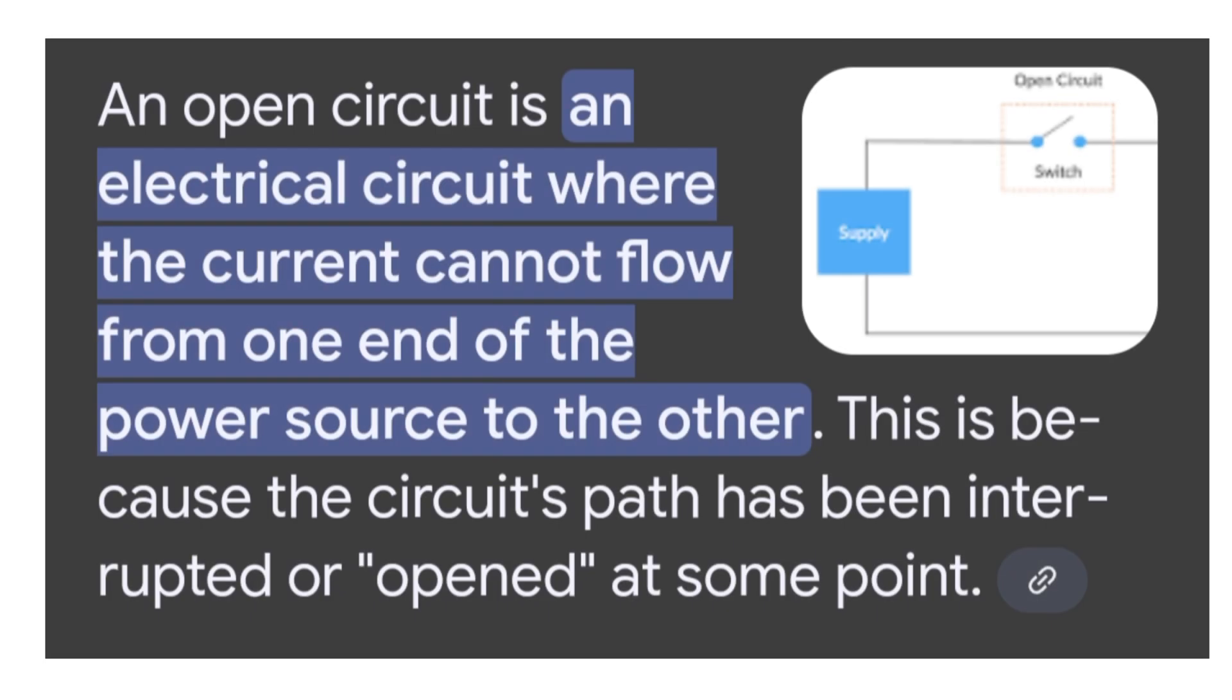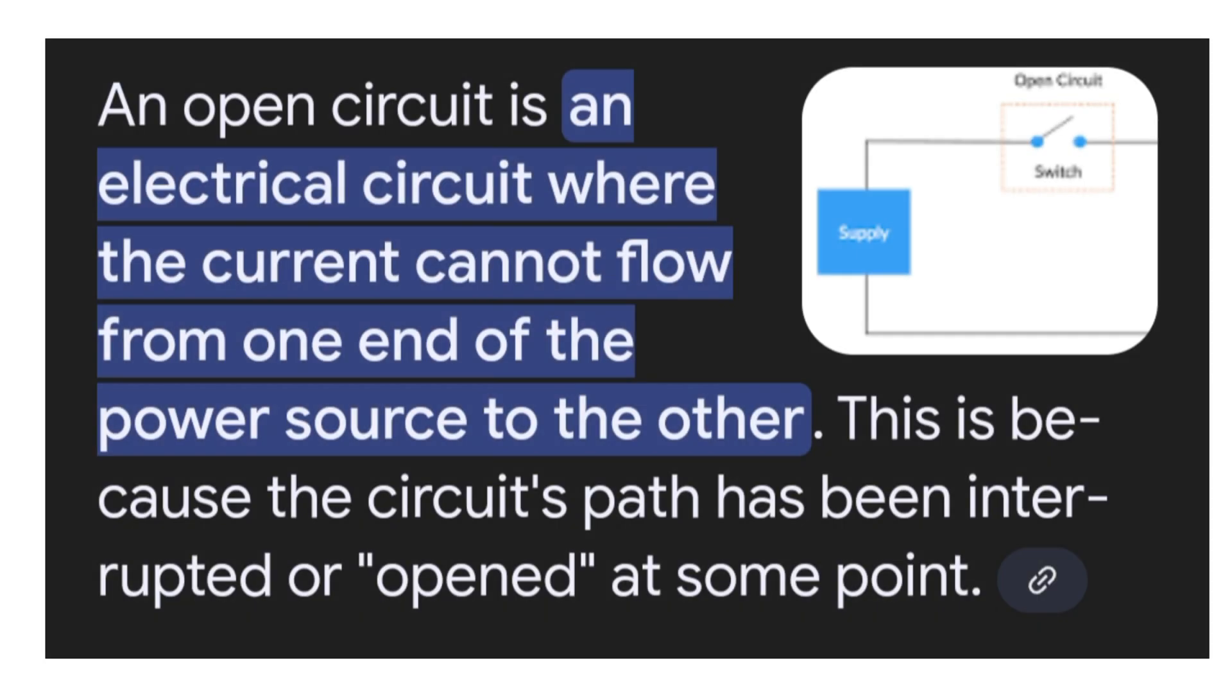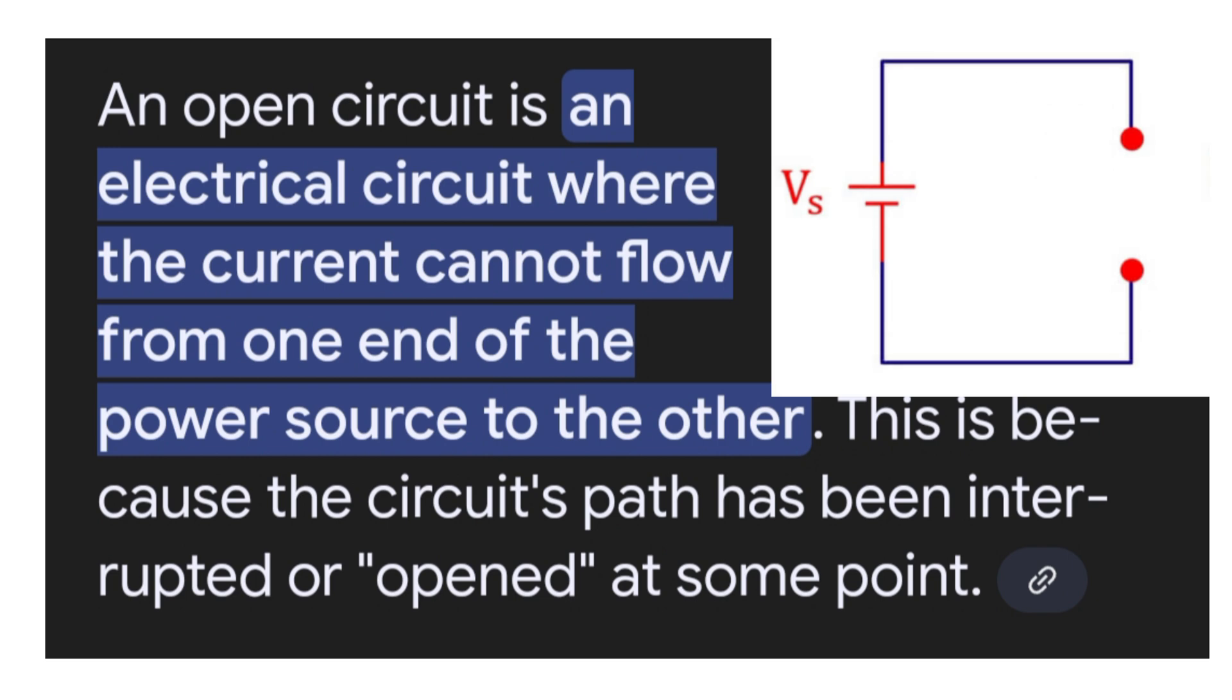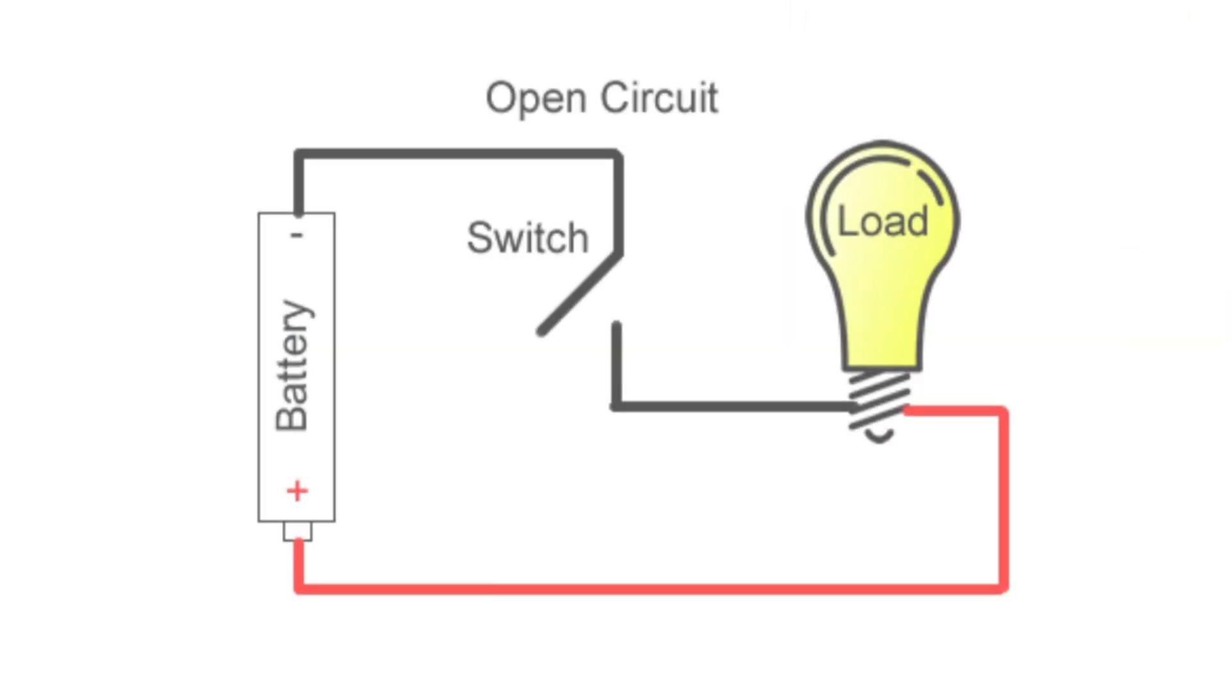An open circuit is an electrical circuit that has been interrupted or broken, causing the current to stop. Here, no current will flow through the circuit. If no current flows through the circuit, then the devices or loads which are connected to the circuit will not function well.